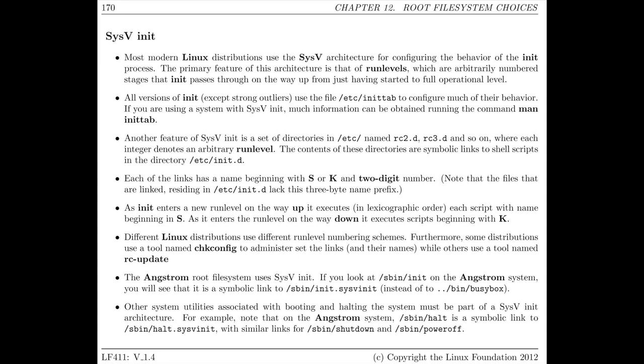For each one of those run levels, there's a directory in the etc directory called rc some-number dot d. The dot d means it's a directory. Within each one of those directories, there's a link that goes back to the real initialization script in the /etc/init.d directory. All the links in the run level directory start with either a capital S or a capital K, then two digits used for ordering, and then the rest of the name of the initialization link. As you enter a run level, all the S links are executed. As you leave a run level, all the K links are executed. Each script is passed a parameter of either start or stop.